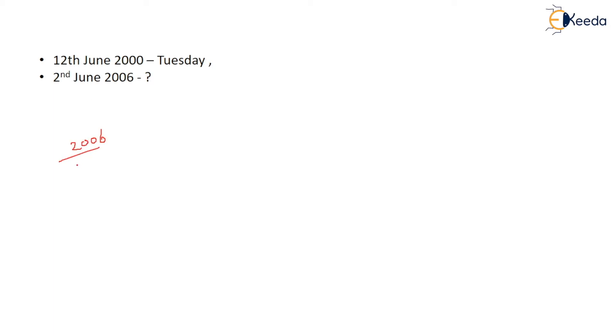Okay, this is the question: if 12 June 2000 is Tuesday, what is 2nd June 2006? So big year minus small year — how much is remaining? Six. Now the number of leap years: the year 2000 is a leap year.